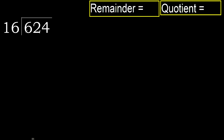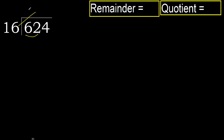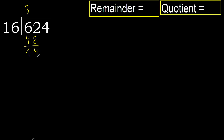624 divided by 16. 6 is less, therefore next 62. 62 is not less. 16 multiplied by which number is nearest to 62 but not greater? 16 multiplied by 4 is 64, which is greater. Multiplied by 3 is 48, which is not greater. Subtract: 14.